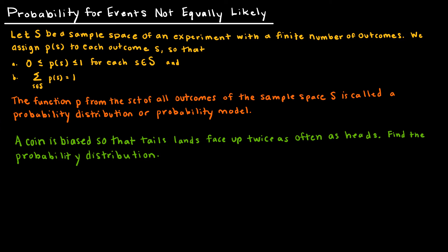Let S be a sample space of an experiment. S is just the set of all outcomes, the sample space, with a finite number of outcomes — we're not going to deal with any infinite outcomes in this course. We assign P of S to each outcome S so that the probability is between 0 and 1 for each outcome, and the sum of all the probabilities is 1. It's the same rules we talked about before; here we're just specifying that the events are not equally likely.